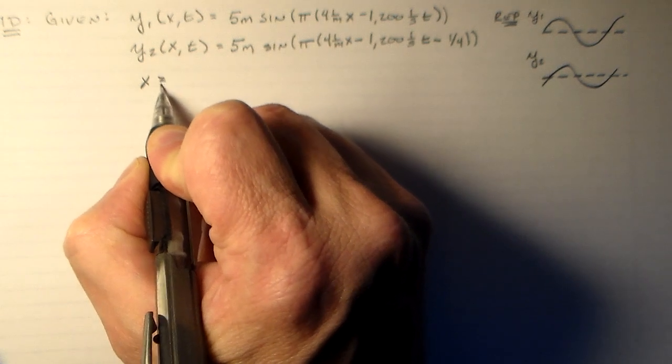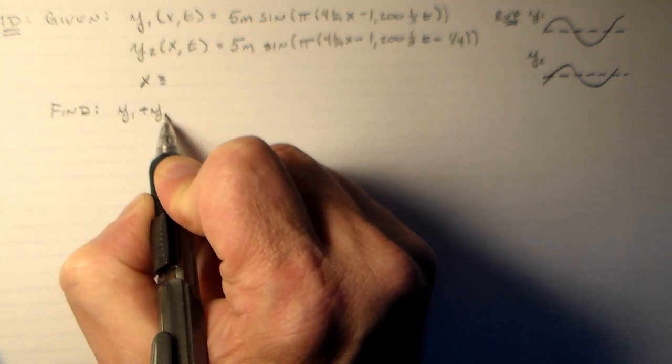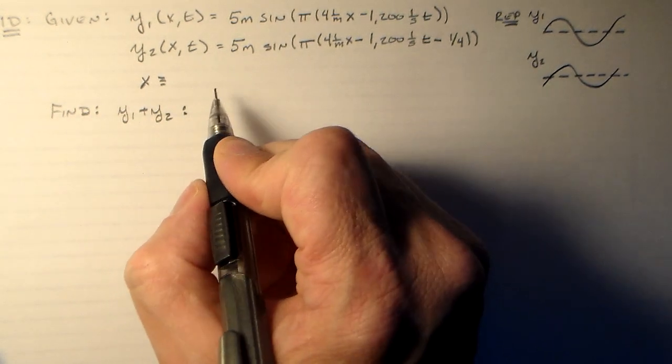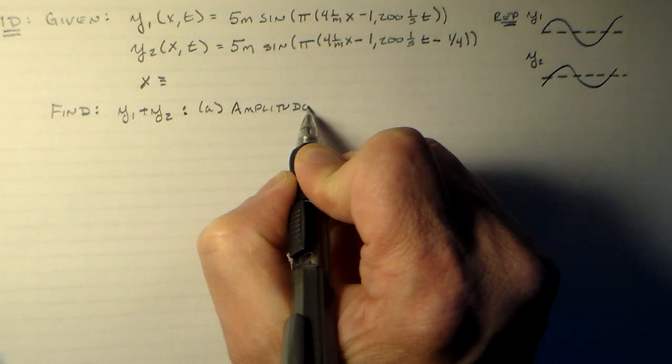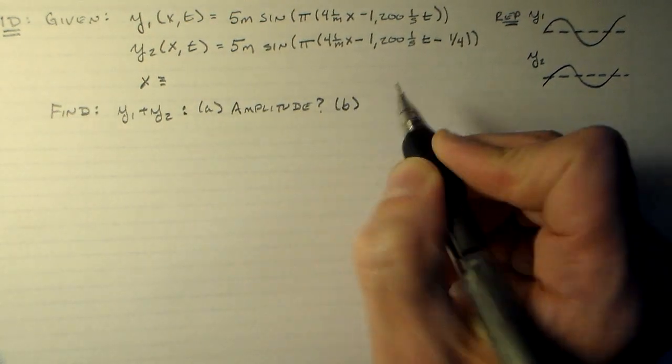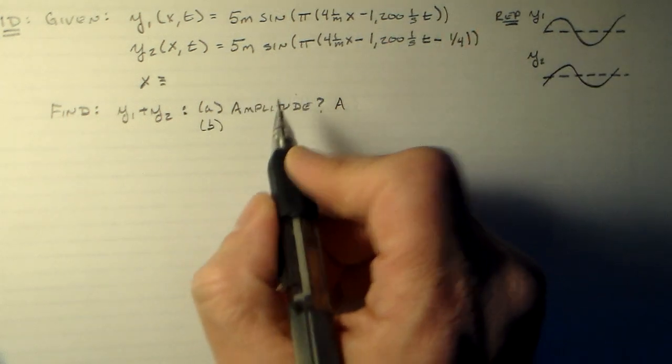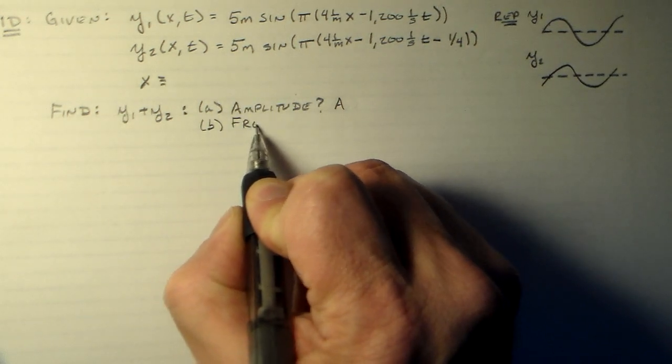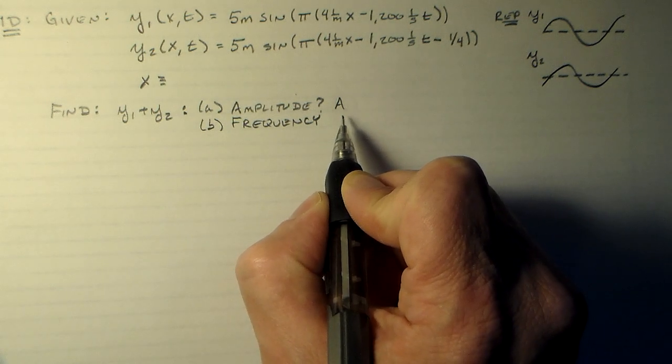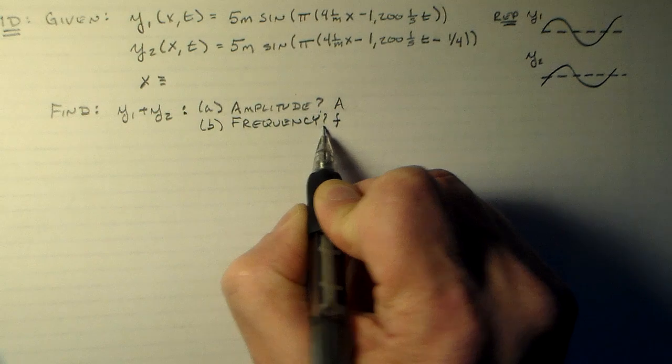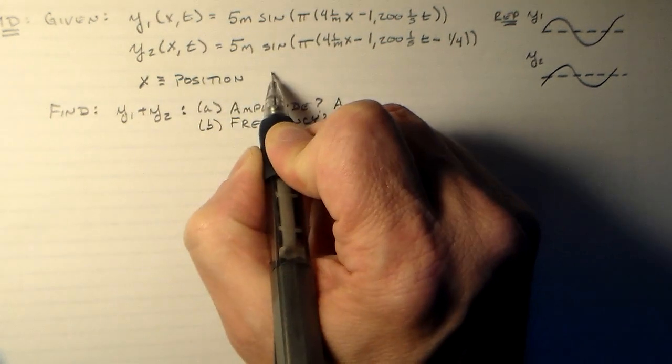So before we can say we want to find y1 plus y2, what do we want to know about it? What a is the amplitude? Okay. And B, the frequency. All right, let's use F for that. So now we've got here our X, our position, and T is time.